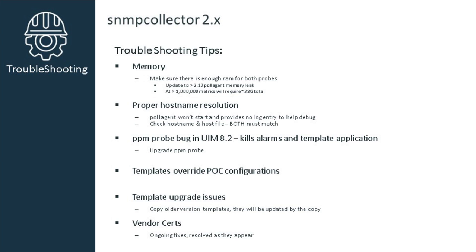It's important to realize that the supported number of metrics for version 2 is a little under a million metrics, and that's assuming a fairly small number of devices, approximately just under 2,000. This alone would require for both probes combined a total of about 32 gigabytes of memory. This does not include memory space or CPU capacity for other probes. The best solution would be to scale out horizontally and have multiple SNMP collectors to do the job.